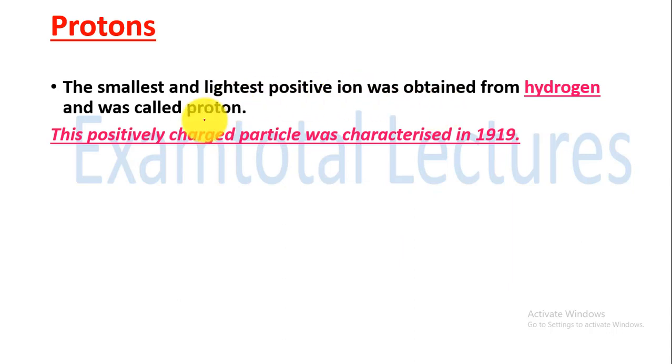The smallest and lightest positive ion was obtained from hydrogen. These positively charged particles were characterized in 1919. And proton is positively charged. It was identified by Ernest Rutherford. So discovery was started by Goldstein, but at that time he didn't give it a name. The naming was done later on.